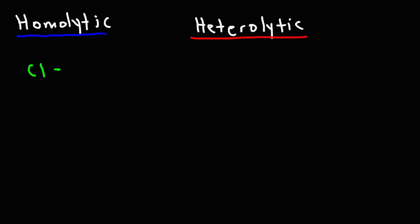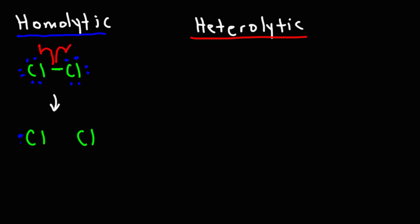Homolytic bond cleavages typically occur with radical reactions. For example, here we have chlorine gas, and if we were to irradiate it with UV light, the chlorine bond is going to break. A bond represents two electrons. Because these atoms are the same, they have an equal pull on the two electrons in this bond. So when that bond breaks, it makes sense that each atom takes one electron. We draw a half arrow to represent the flow of one electron, and this gives us two chlorine radicals — an atom with an odd number of electrons. This step is known as initiation in a free radical reaction.